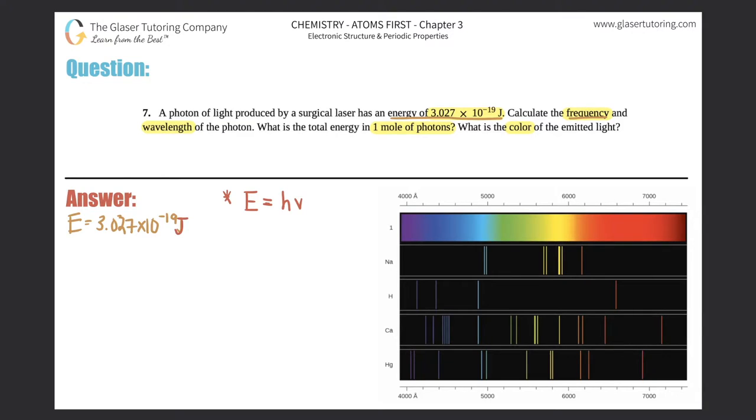Energy equals Planck's constant, which is h, times frequency. Just know that Planck's constant is a constant number - 6.626 times 10 to the negative 34th joules per second. Memorize that number. We're going to use that for this formula now because we got to find out what the frequency is, which is ν.